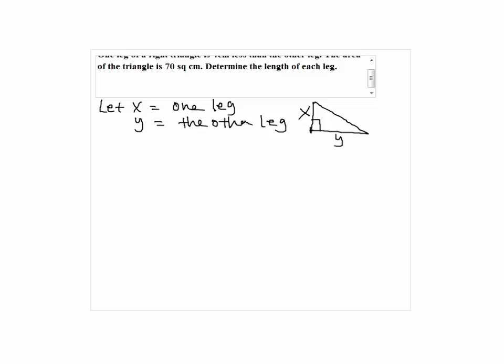Since one leg, which is x, is 4 centimeters less than the other leg, we have an equation x equals y minus 4.